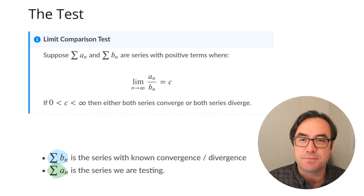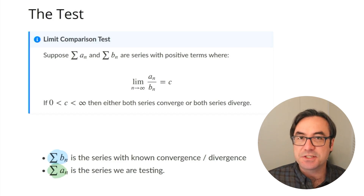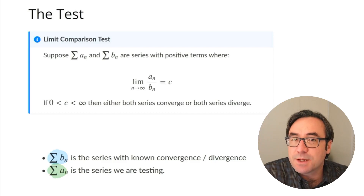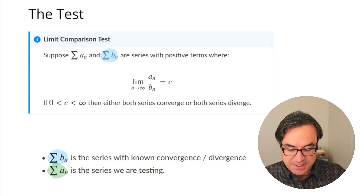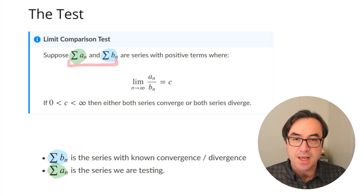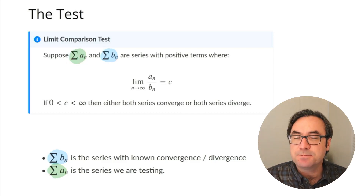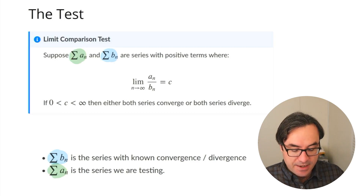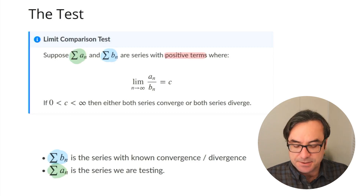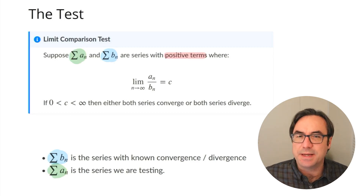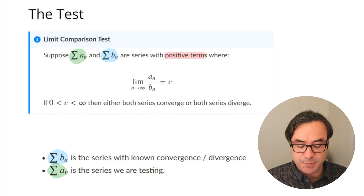For the purposes of the wording of this test, we're going to call this second series sigma bn. So we have two series: one we know something about, one we don't. In order for us to use this test, there's a necessary condition — both series have to have positive terms. We can relax that a little bit: it's okay if the first few terms have some negatives, as long as eventually all the terms become positive.